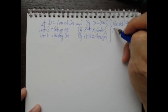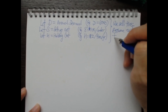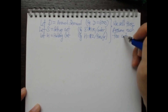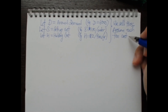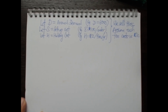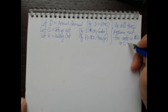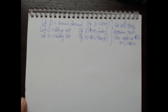We sell tires. Assume that each tire costs us — not the cost to our customers, but the cost to us — $20 to buy. That is a one-time purchase cost. So C = $20, which is our purchase cost per unit.